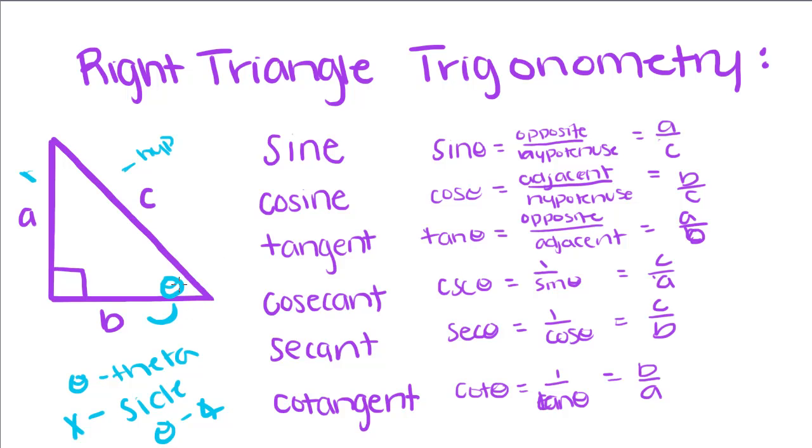Tangent talks about this angle's opposite side, which is still A, over its adjacent side, the side next to it, side B. So, A over B.